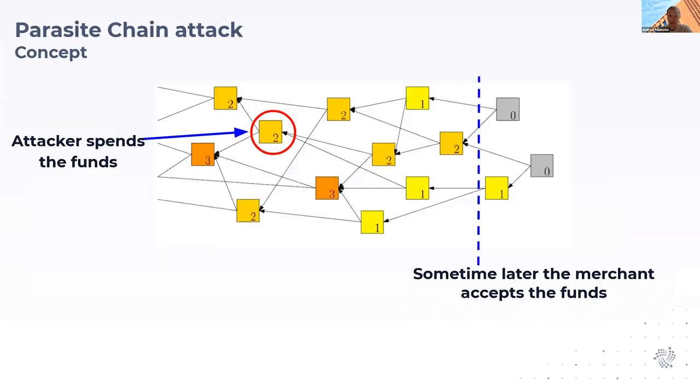In addition, there can be a double spend attack performed in this system. An attacker places a transaction to a merchant in the Tangle and waits till the merchant accepts these funds.